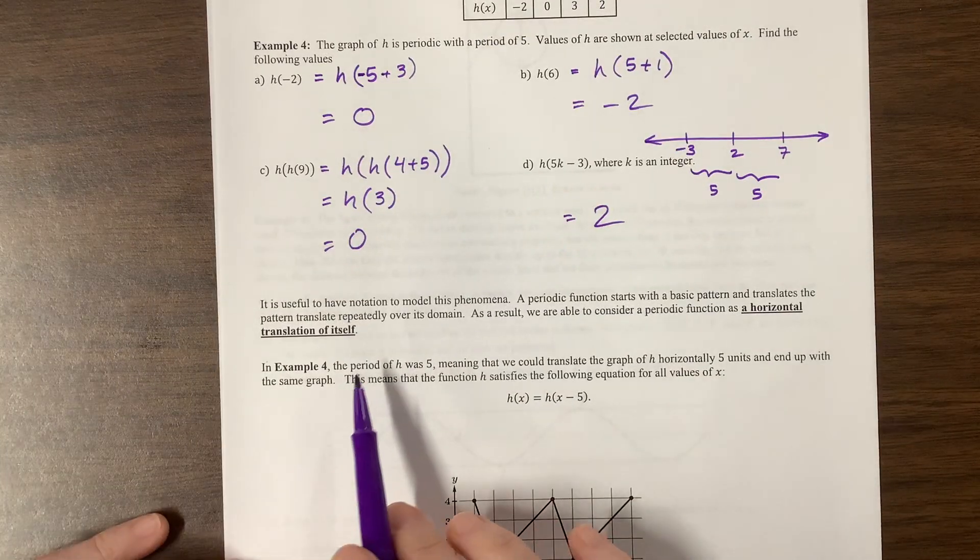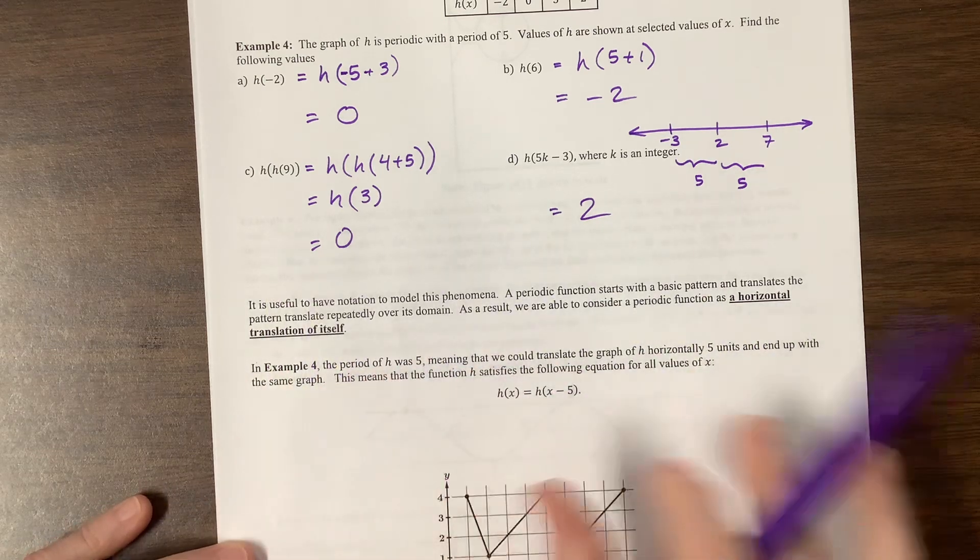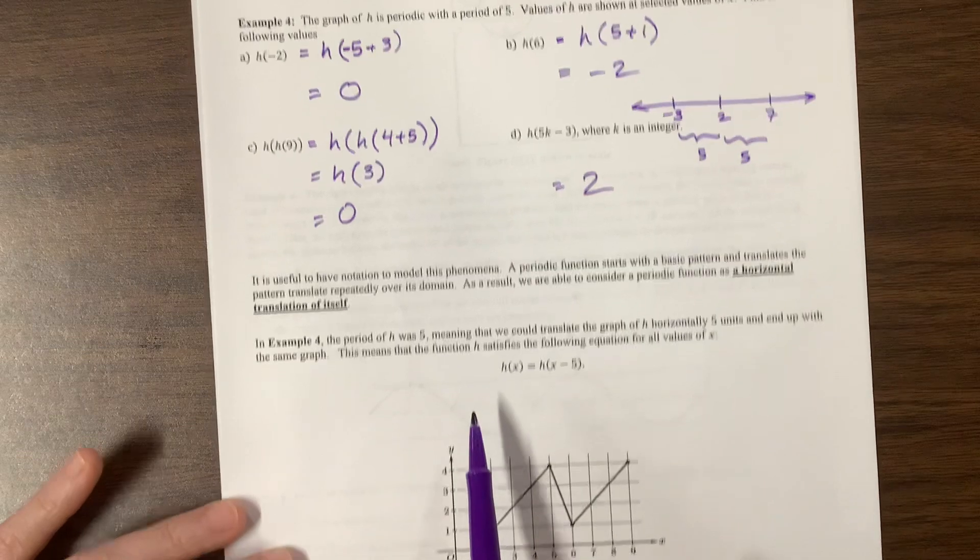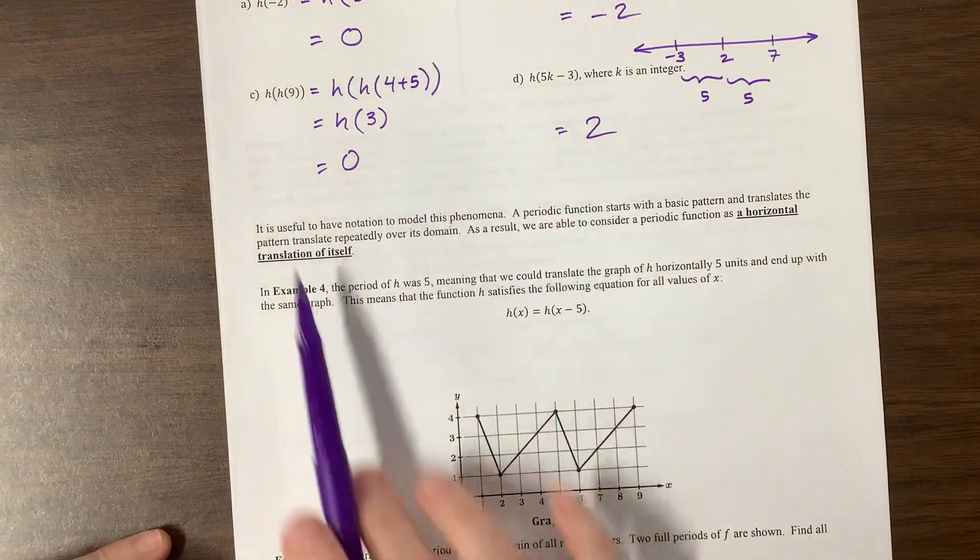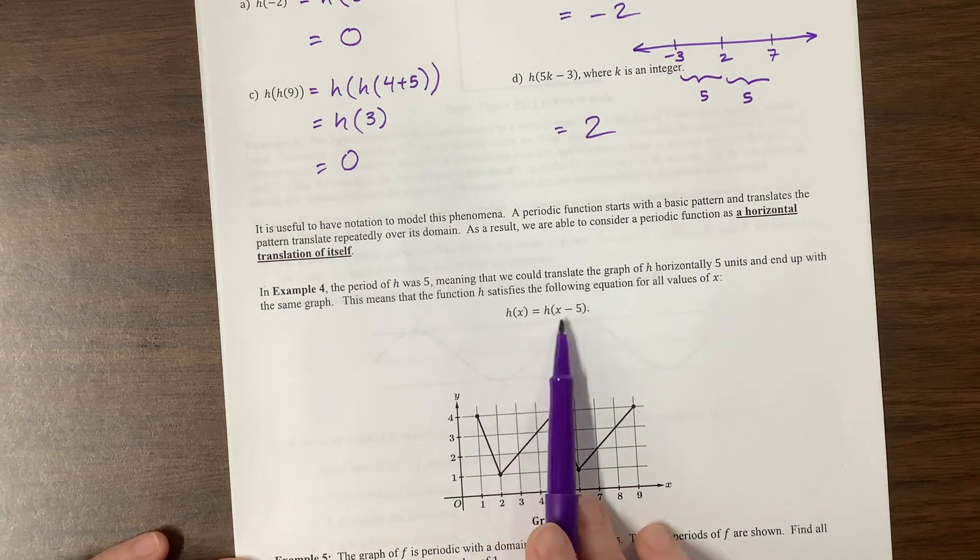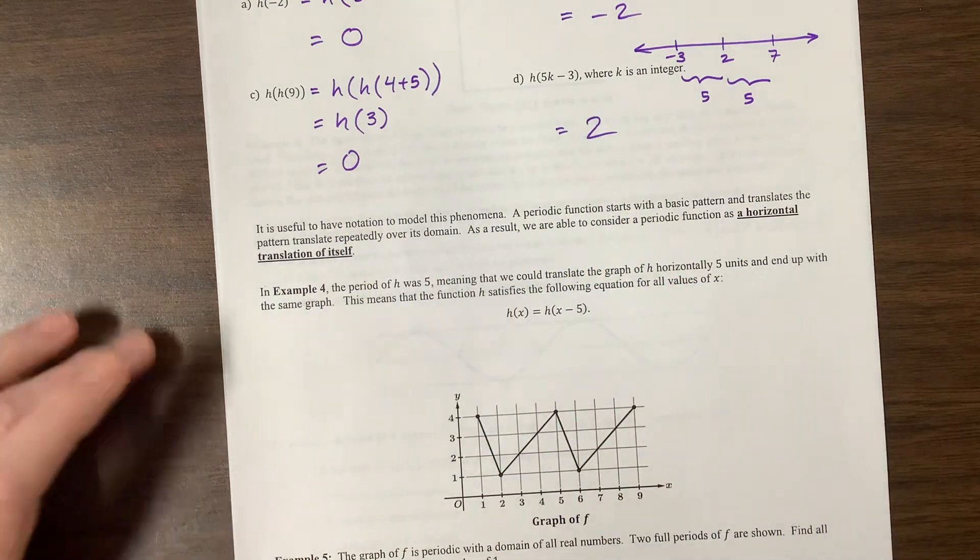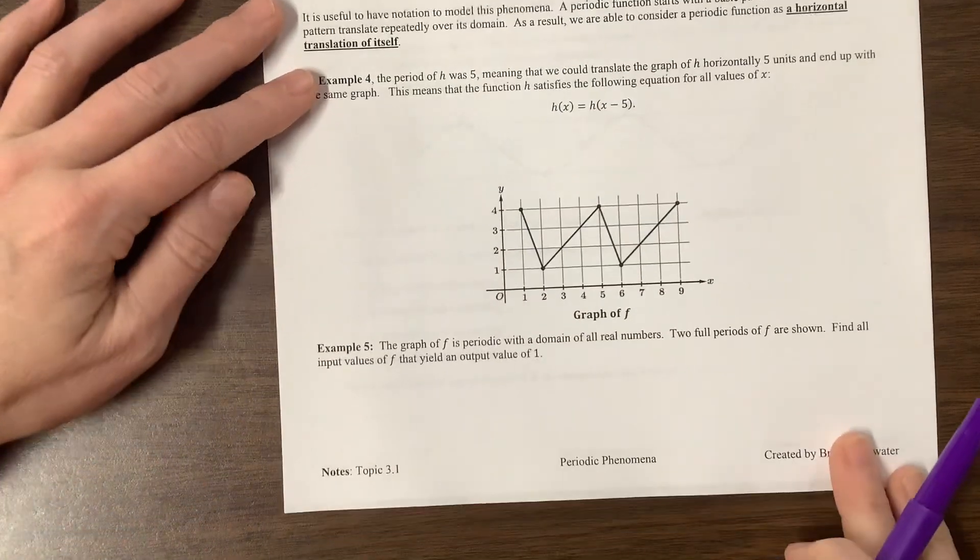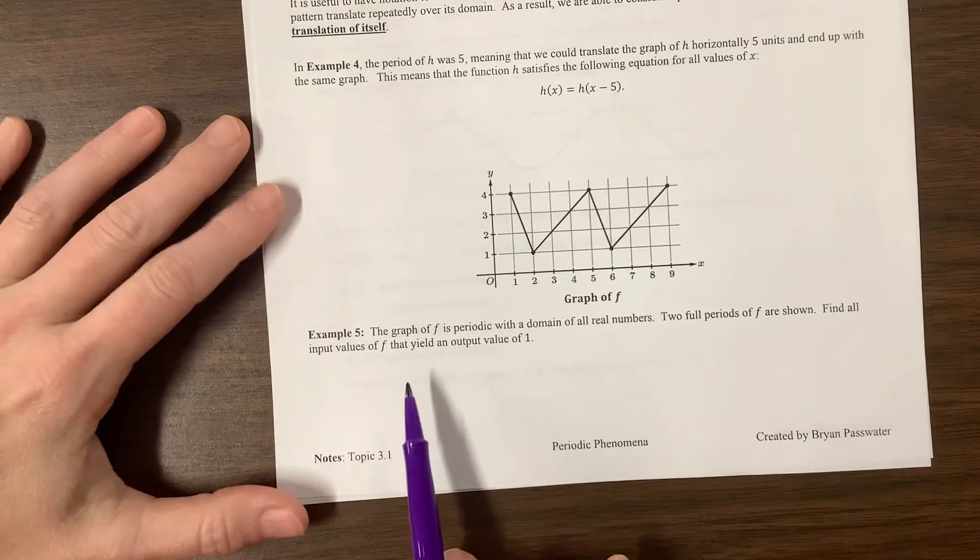It's useful to have a notation for periodic function with a basic pattern that translates. It's translating, it's shifting left and right. So it's a horizontal translation. In example 4, so that was this one, our period was 5, so what we could do is we could say H of X was equal to H of X minus 5. I can shift my graph 5 units. Did I answer all of that? Super, I think I did explain that.